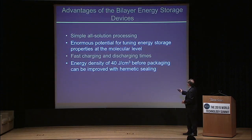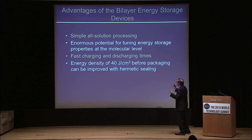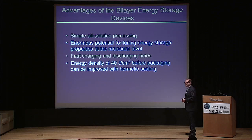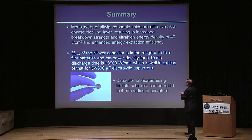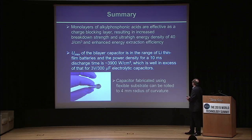So the features, aside from the energy densities, are that we make these materials using primarily solution processing, doing spin coating and very simple processing — very cheap. There's a lot of potential for tuning the energy storage properties with these different polar groups that we attach in these materials. To summarize: these monolayers of alkyl phosphonic acids are effective in blocking charges. We've gotten energy densities at 40 joules per cubic centimeter and 3,900 watts per cubic centimeter. And these things can also be mass manufactured on flexible substrates so that you can have lightweight and flexible devices.